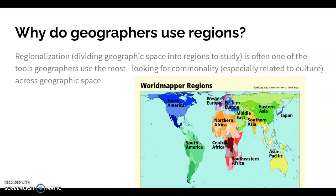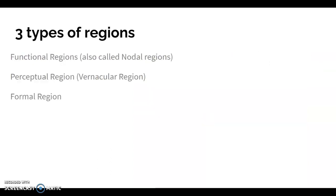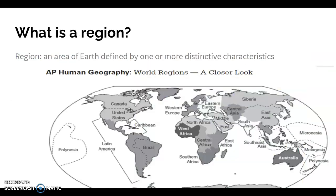Think of it like a history class, where we frequently divide historical periods up to study a particular era. Geography works the same way, except instead of chronological time, we use physical space. We look for commonalities across geographic space. We will use the term region a lot in this class and talk about world regions frequently.